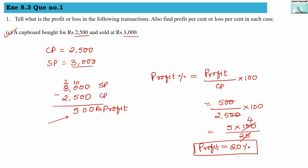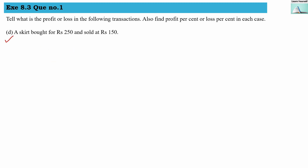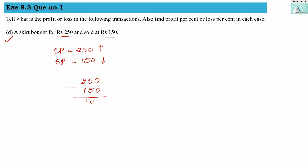Part (d): a skirt bought for rupees 250 and sold for rupees 150. The cost price is 250 and selling price is 150. Since selling price is less than cost price, this is a loss. Subtracting: 250 minus 150 gives us 100 rupees as the loss.